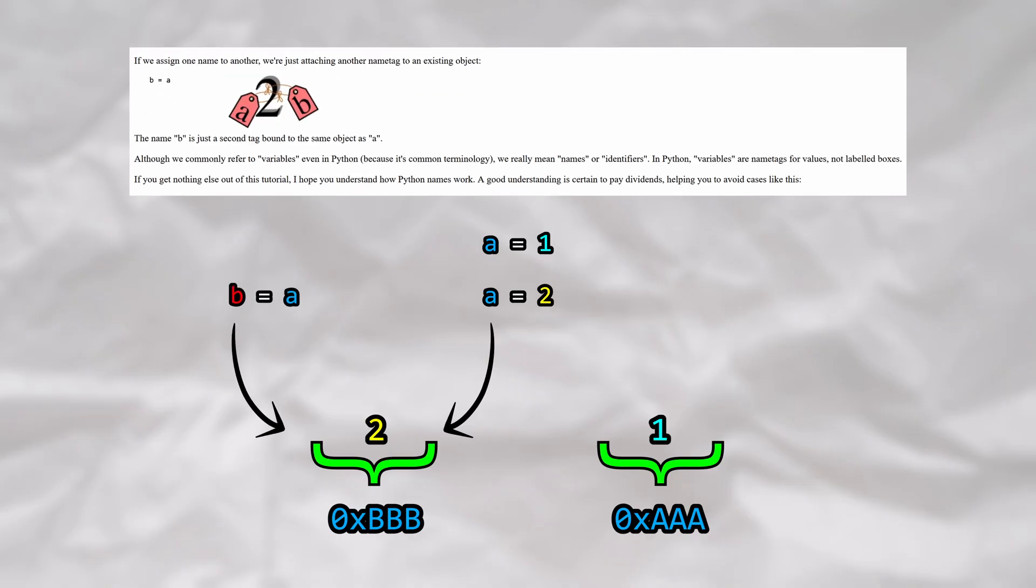If we create a new variable called b and assign a to it, both a and b will point to the same location in memory containing the integer 2. I know this might seem a little abstract, but we don't need to focus too much on this for now.